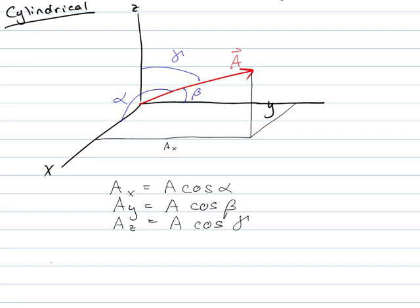And the y component is a cosine of beta. And the z component is a cosine of gamma. So now again, if I want to find the magnitude, it's kind of neat. I know that the magnitude is a, is also equal to square root of this.